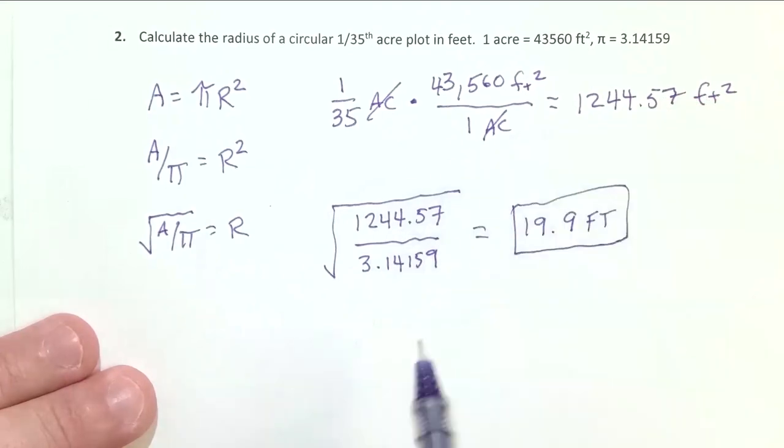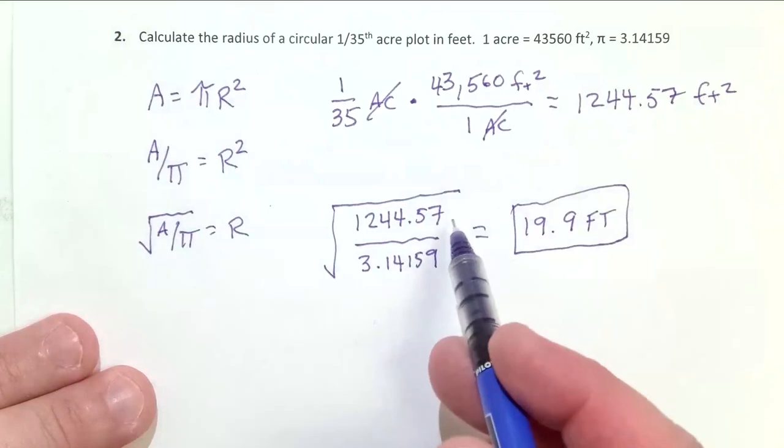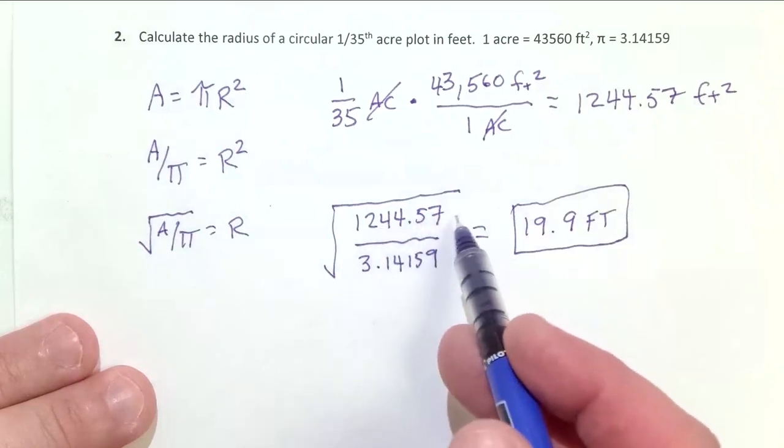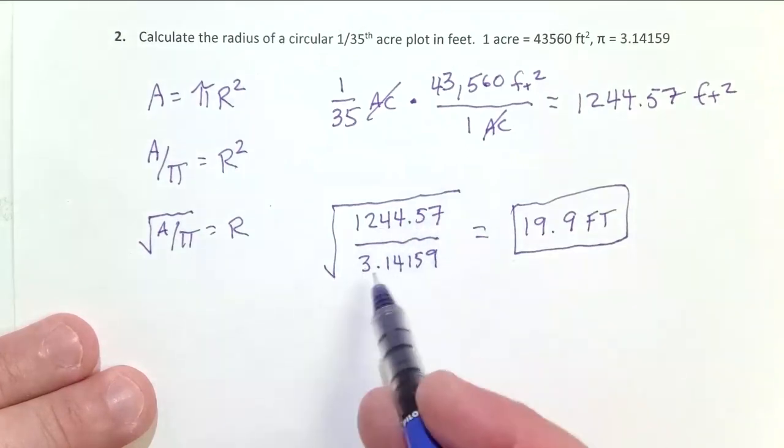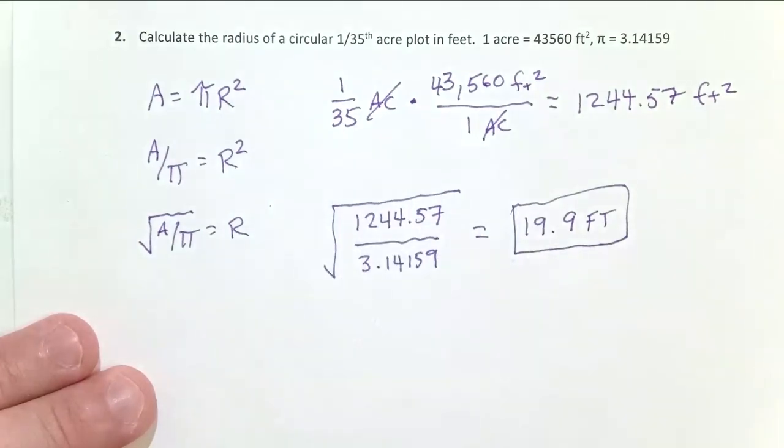That's our answer. I didn't put units in over here, but we noticed that that has square feet. So this numerator here is in square feet, pi is unitless, and so I'm simply taking the square root of square feet, which leaves my units at feet. And that's the solution to that problem.